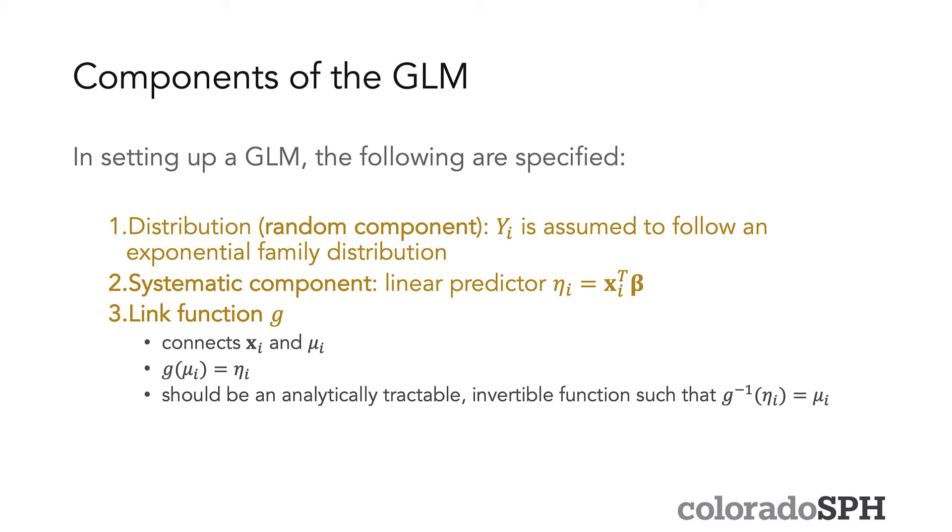The second component is the systematic component, which we also call the linear predictor, or X_i^T beta. And often in GLMs, we call this linear predictor eta, because it can be easier when writing out these models to just make it one variable name.